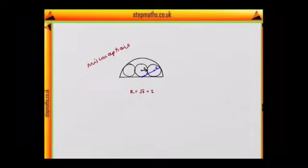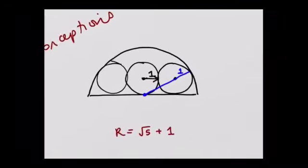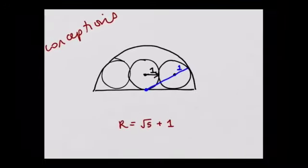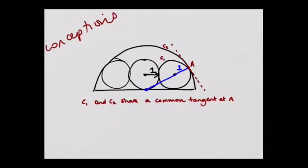Okay, well, let's see what we have. I know that these circles at this point are both tangent to each other. Well, what does that mean? That means that if I drew a tangent to the big circle, it would also be a tangent to the small circle. The first thing I can write down is that it's always good to give these things a name when you're trying to describe them. So I could say that C1 and C2 share a common tangent at A. Okay, well, what does that mean?